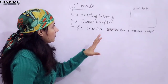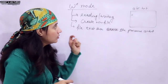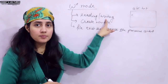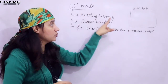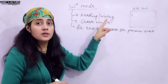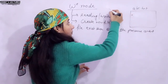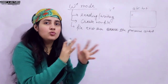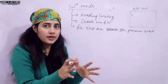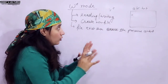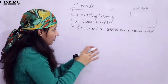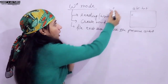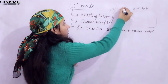The next thing is: W plus mode is especially for writing purpose, similar to how R plus mode was mainly for reading purpose but we can also do writing. So now you can write down the difference between R plus mode and W plus mode.